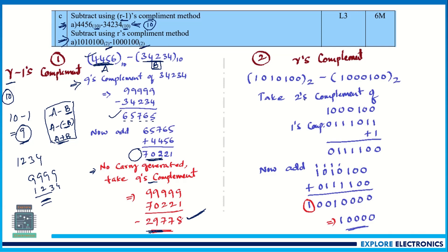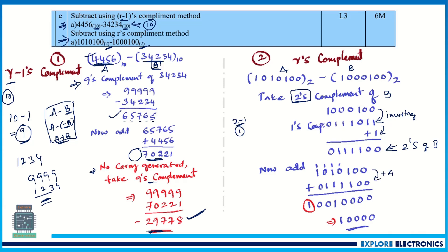The second subtraction question uses the r's complement method where the radix is 2, so we use the 2's complement. Here a and b are binary numbers; we take the 2's complement of b by first inverting all bits to get the 1's complement, then adding 1. We add this to a. If a carry is generated, we neglect the carry and take the remaining result as the subtracted answer.